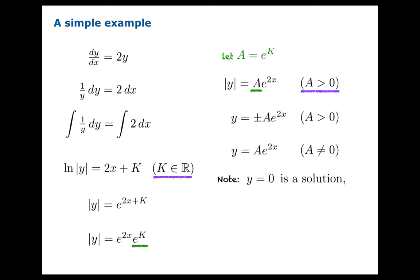On the other hand, 2y is obviously also equal to zero. Therefore, the differential equation is satisfied. y equals zero is a solution. And the way you can get y equals zero from the formula on the previous line is to let A be zero. So actually, we don't need to put any restriction on A in the end.